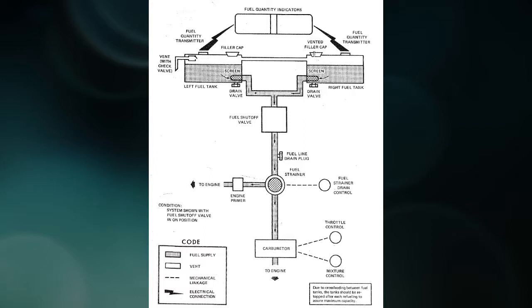Then it flows down through another strainer to the engine, to the carburetor. The first thing before it gets to the engine, it goes through an engine primer. Basically when we start the engine, we don't have a fuel pump in a Cessna, and so there is absolutely no fuel in the engine when you start it.